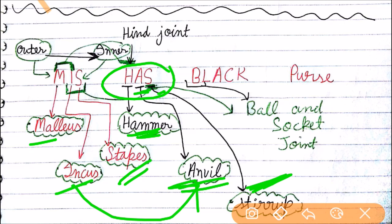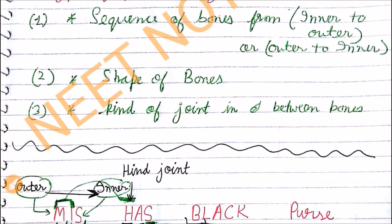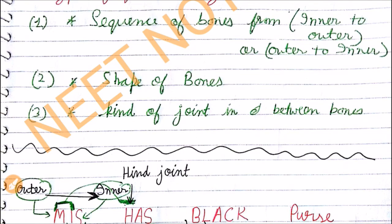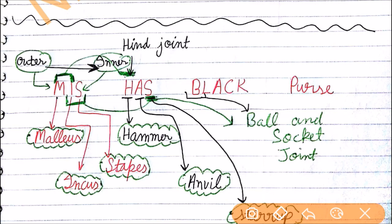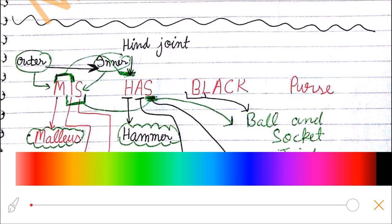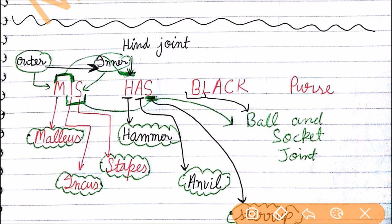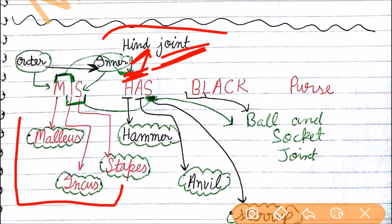Now the last question which was left is different joints. For joints we have very simple trick. I just want to tell you, in between malleus and incus you just need to take H for hammer. So in between malleus and incus, hinge joint is present.